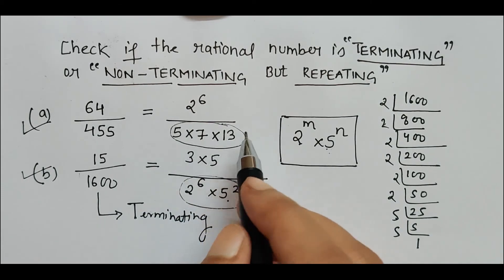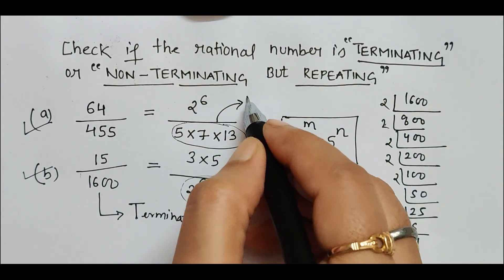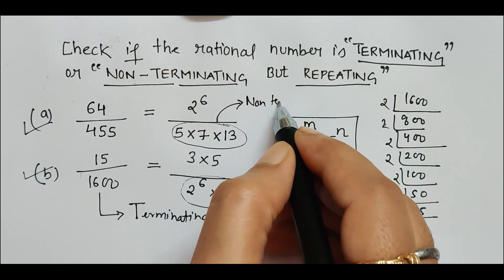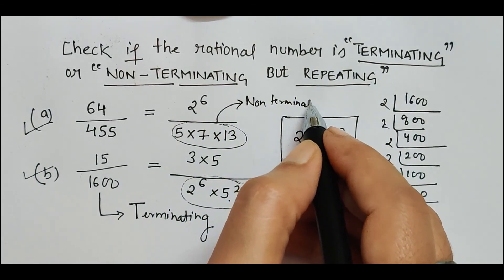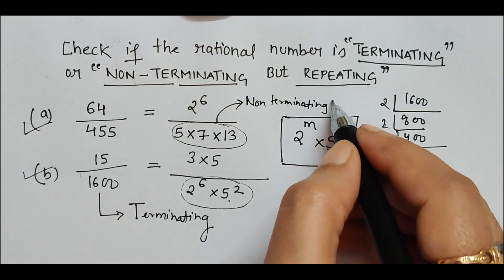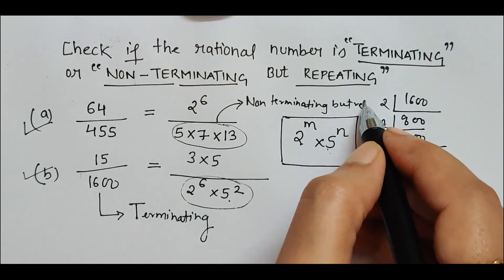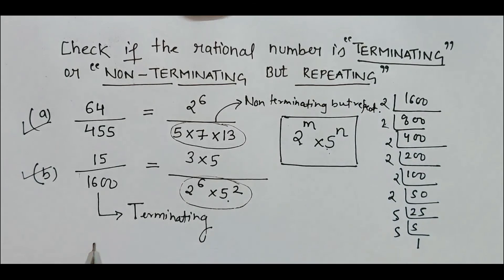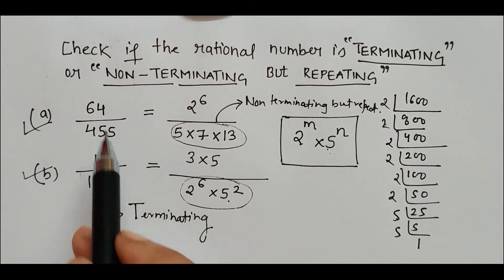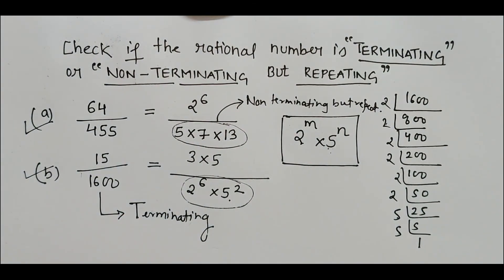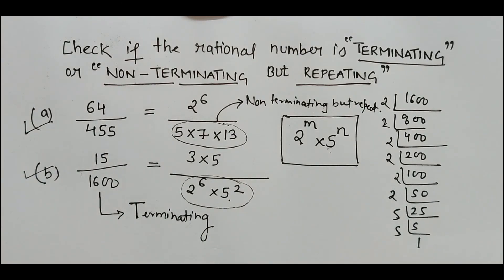So this is how we check if any rational number is terminating or non-terminating but repeating. Thank you.